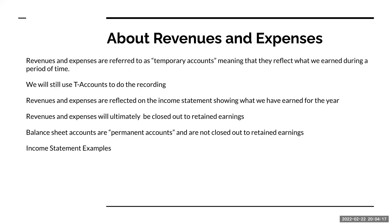It's very important to remember that revenues, expenses, and dividends are referred to as temporary accounts, meaning they reflect what we've earned during a period of time. We're still going to use T-accounts to do the recording. Revenues and expenses are shown on the income statement, and that net amount — revenues minus expenses — is referred to as net income. Ultimately, revenues, expenses, and dividends will be closed out to retained earnings.